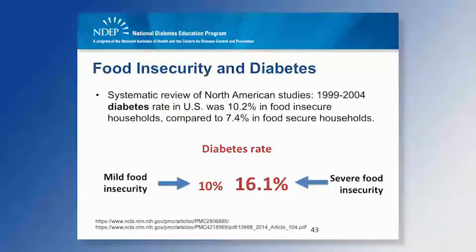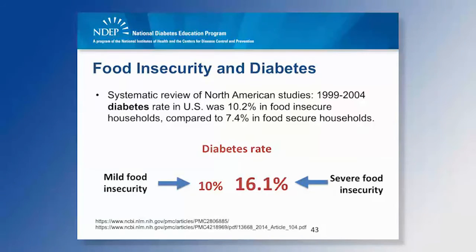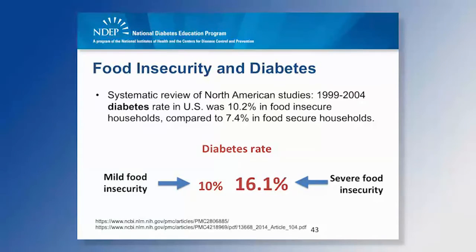A study was done recently — a systematic review taking all studies published in North America to find a cumulative summary. They noticed the higher the rate of food insecurity, the higher the rate of diabetes. The diabetes rate among those who were food insecure in the United States was 10.2 percent, compared to 7.4 percent for those who were food secure. Breaking it down further, mild food insecurity showed a diabetes rate of 10 percent, while severe food insecurity showed a rate of 16.1 percent — a much larger proportion with type 2 diabetes.